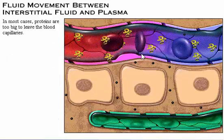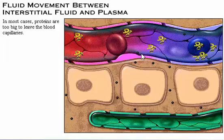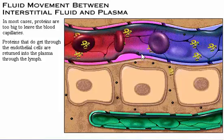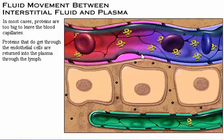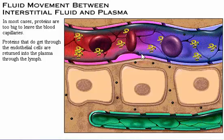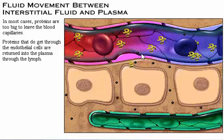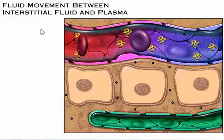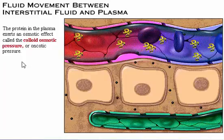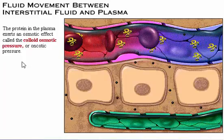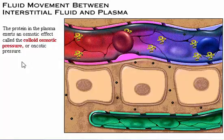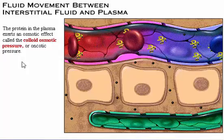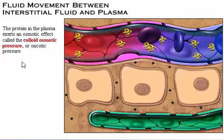In most cases, proteins are too big to leave the capillaries. Proteins that do escape from the blood capillaries are removed by the lymph capillaries and are moved back into the plasma by way of the lymph. Because the protein concentration in the interstitial fluid is low compared to the concentration in the plasma, the protein in the plasma exerts an osmotic effect called the colloid osmotic pressure, or oncotic pressure.